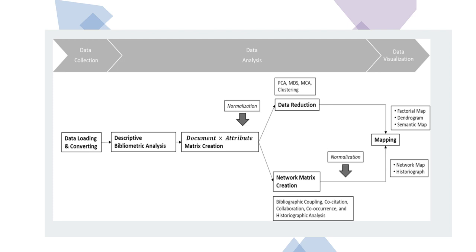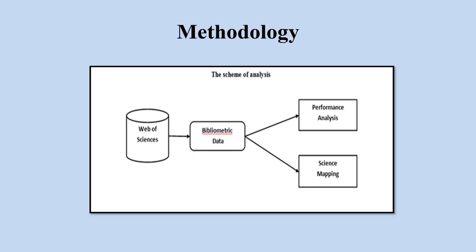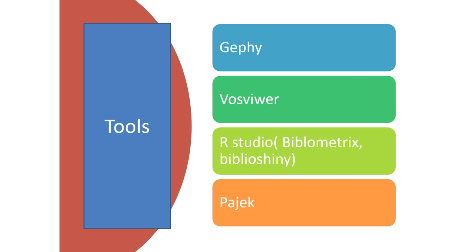This is a flowchart of citation analysis. First, you download raw data from Scopus, Web of Science, or Google Scholar and load the data into the software. Then a descriptive bibliometric analysis is conducted, with arithmetic and programming operations performed in the software. After that, some data are reduced, metrics are created, and data normalization takes place. You will get results as factorial maps, network maps, and histograms from the software. Web of Science is optional — you can use Scopus or Google Scholar — and from this you can do performance analysis as well as science mapping.